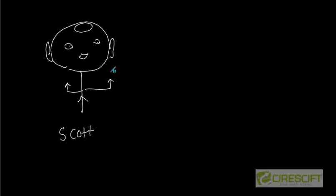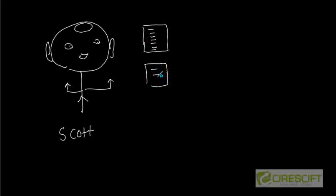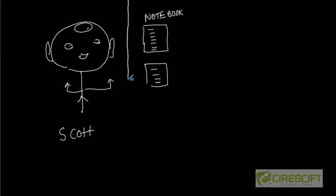Scott's parents gave him some notebooks to write in. Scott started to write about what is happening in and around him in a notebook like this. Once a notebook is completed, he moves on to another notebook. Scott has a small memory where he can remember things, but because he forgets, he writes those things from his memory into the notebook.